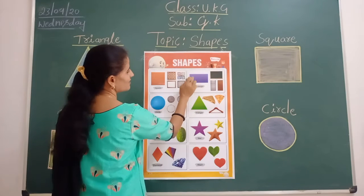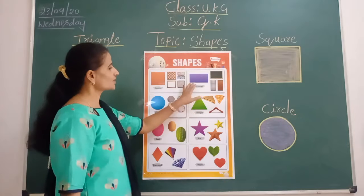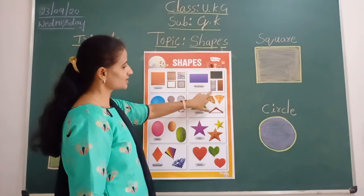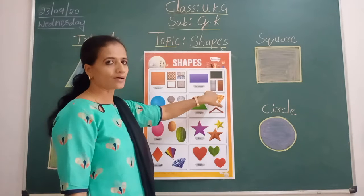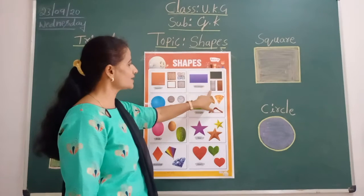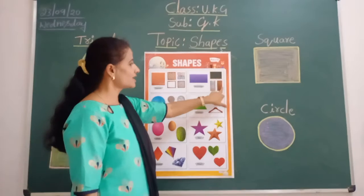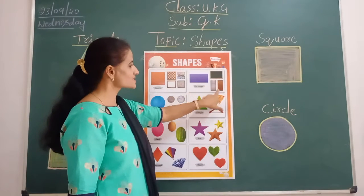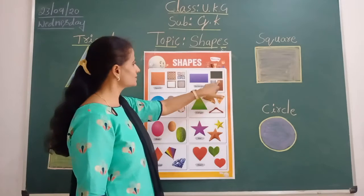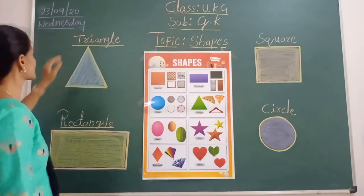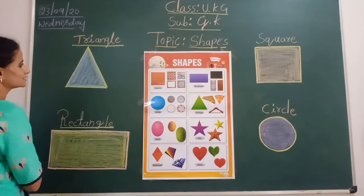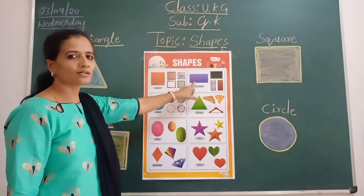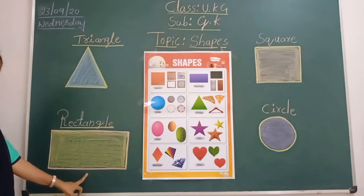So, this is the shape of rectangle. What color is there? See children, what is this picture? Fridge — you have one in your home, yes? Fridge also rectangle shape. Our house door is also rectangle. This blackboard also rectangle. What is this shape? Rectangle.